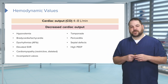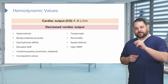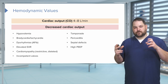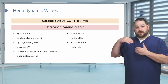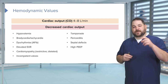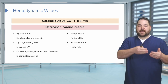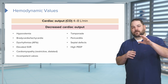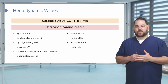A high PEEP — positive end expiratory pressure — in intubated and sedated patients can decrease cardiac output. When they're breathing out, we have pressure going back in to keep those air sacs open. If we increase that PEEP too much, we actually reduce the blood flow going back into the heart because we're putting a lot of pressure on that superior vena cava, squeezing it down and not letting blood return to the left ventricle. We're talking about PEEPs up in the range of 16, 18, 20.